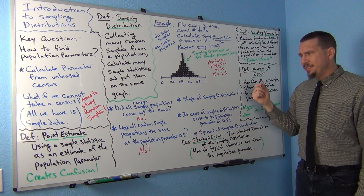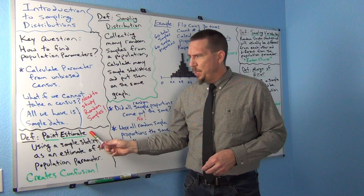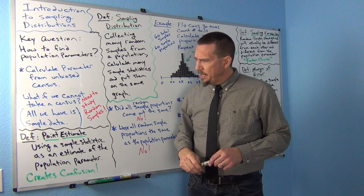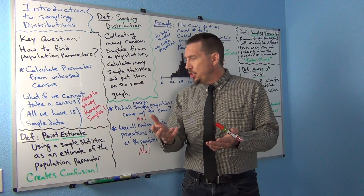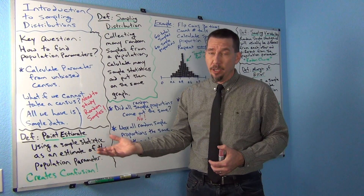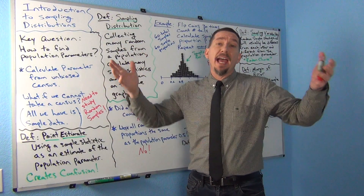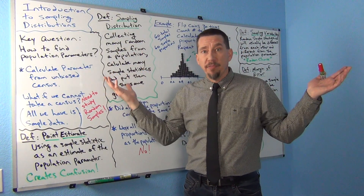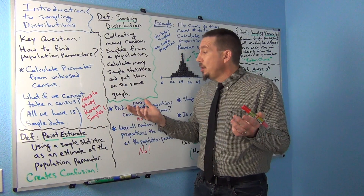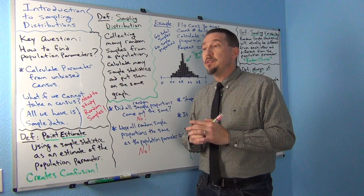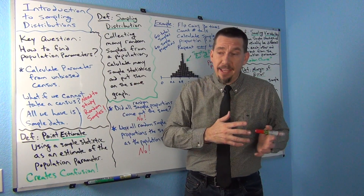This brings up an important topic called point estimating. A point estimate is when someone takes a sample statistic and uses it as an estimate of the population parameter. For example, they may have no idea what the average salary of people in California is, but they took a random sample and the sample mean came out to be $45,000 a year, so they're going to say...